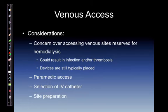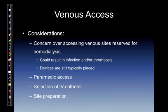Venous access considerations: there is always concern over accessing venous sites reserved for hemodialysis, as it could result in infection or thrombosis and lose their lifeline. In some EMS systems, paramedics are only permitted to access AV fistulas or AV grafts during life-and-death emergencies — follow local protocols. When looking at the graft, it should have a thrill. AV grafts and fistulas have a noticeable prolonged pulsation and a bruit — the sound of turbulent blood flow, which sounds like a low-pitched swooshing as blood passes through the device.